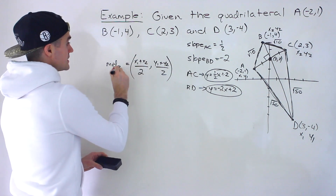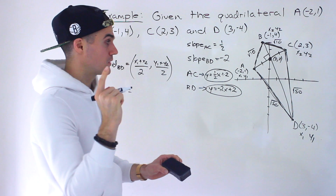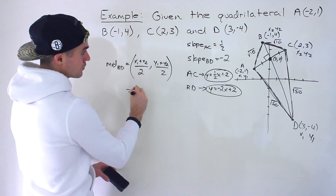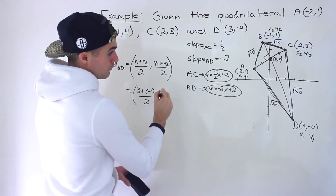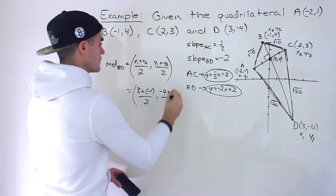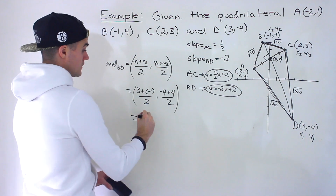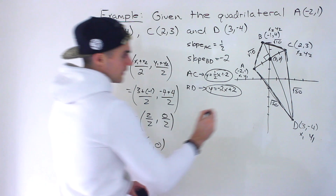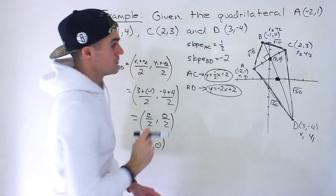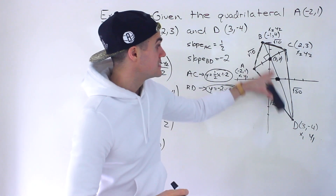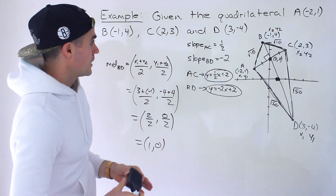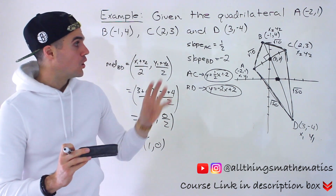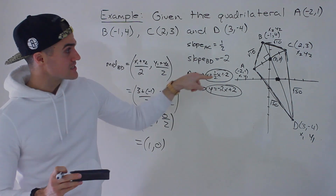Finding the midpoint of BD using B(-1, 4) and D(3, -4): midpoint = ((3 + (-1))/2, (-4 + 4)/2) = (2/2, 0/2) = (1, 0). This is not equal to (0, 2), so the intersection point does not bisect diagonal BD. With this, we've verified that the point of intersection between the diagonals only bisects one of them - specifically diagonal AC.